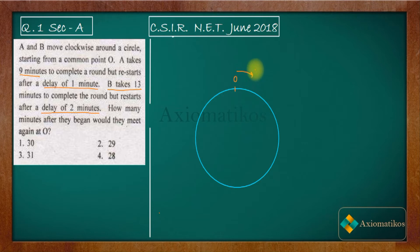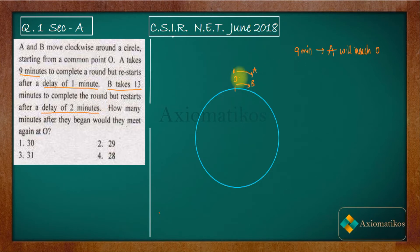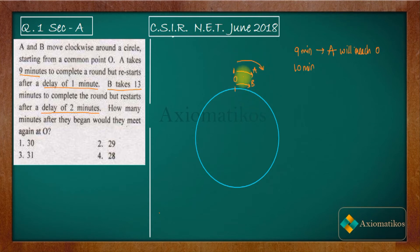A and B both started. After 9 minutes, A will be back at position O. However, B will not reach O because B takes 13 minutes to complete a round — so at 9 minutes, B is not at O. Now A restarts after a 1-minute delay, so after 10 minutes A will move again.